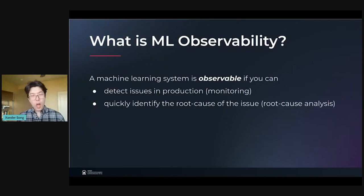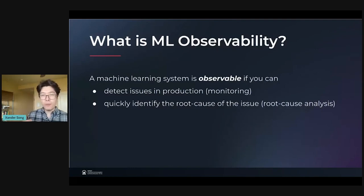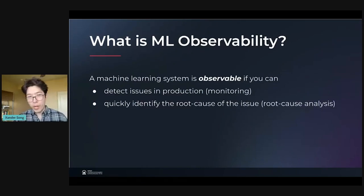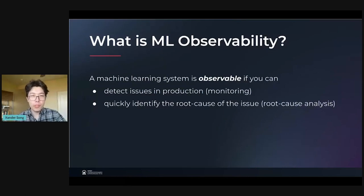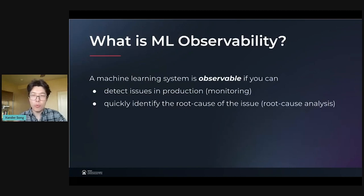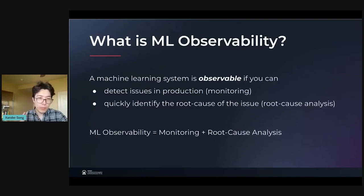The third kind of issue could be a performance issue — for example, if your model is dipping in accuracy in production, or if you have a fraud detection model that has a high false negative rate all of a sudden, you want to know about it. So the ability to detect those issues is what we call monitoring. But when we talk about observable machine learning systems, having monitoring is actually not enough. We also want to be able to quickly identify the root cause of the issue, and that's what we call root cause analysis. ML observability has two parts: monitoring on the one hand, and root cause analysis on the other.